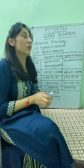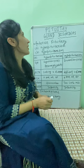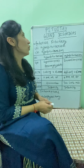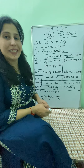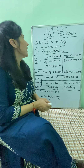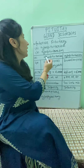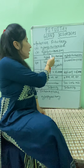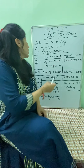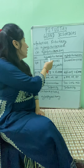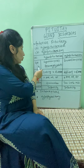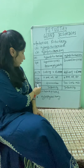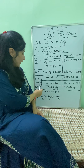Hello everyone. Last video I discussed about the pituitary gland hormones, so today I'm going to discuss about pituitary gland disorders. In the anterior pituitary gland, there is hyperpituitarism and hypopituitarism. The pituitary gland hormones include growth hormone, adrenocorticotrophic hormone, thyroid stimulating hormone, prolactin hormone, follicle stimulating hormone, and luteinizing hormone.